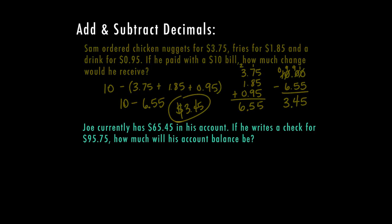Let's try a different word problem here. Joe currently has $65.45 in his account. If he writes a check for $95.75, how much will his account balance be? So let's talk about what's happening here because we know he's writing a check, which means this is going to be subtracted from his account. So if he currently has $65.45, and he's going to subtract $95.75, we need to find out how much money is going to still be in his account. In this case, we can tell that he's actually not going to have any money left in his account.